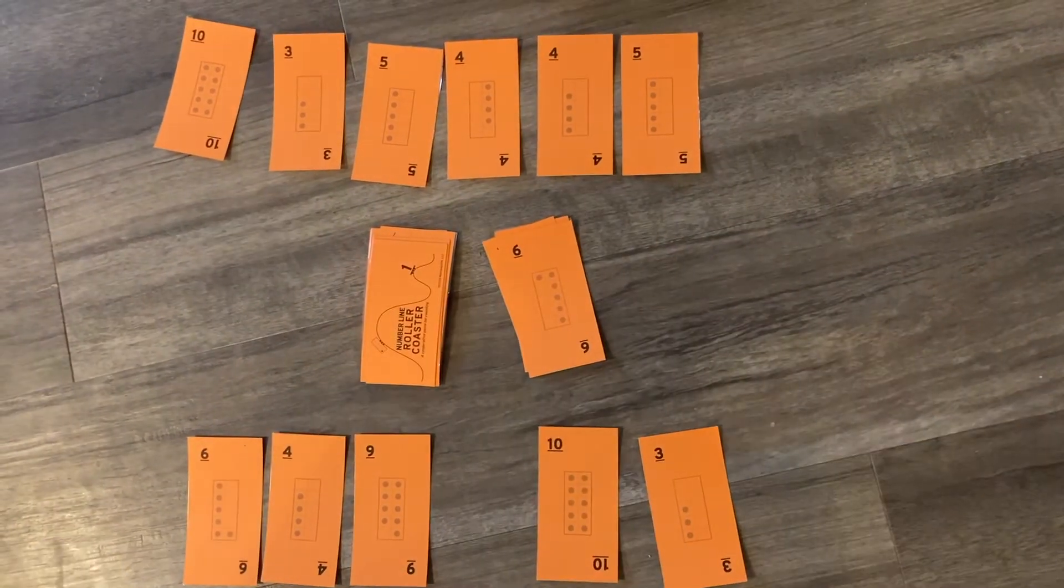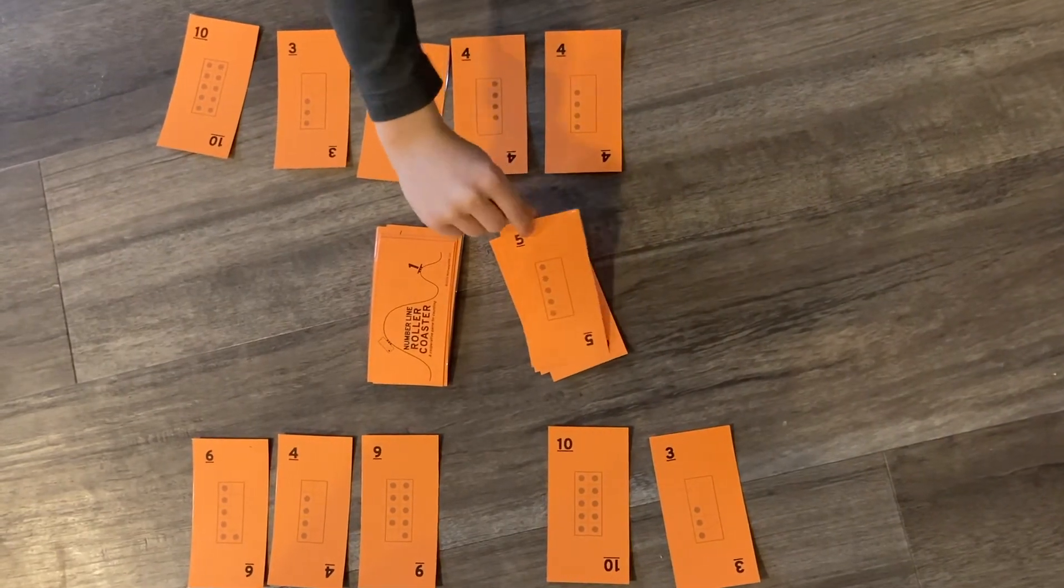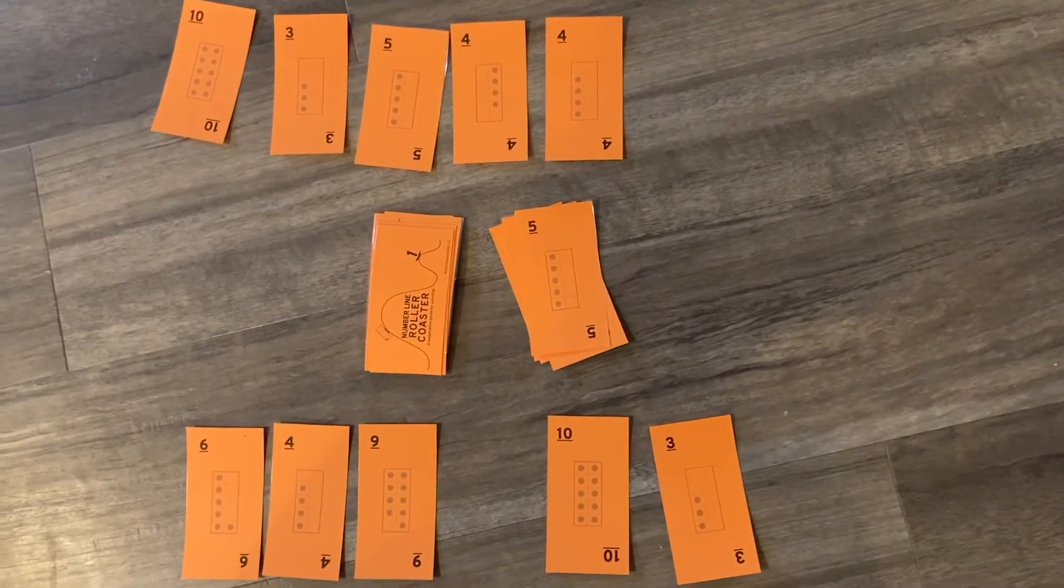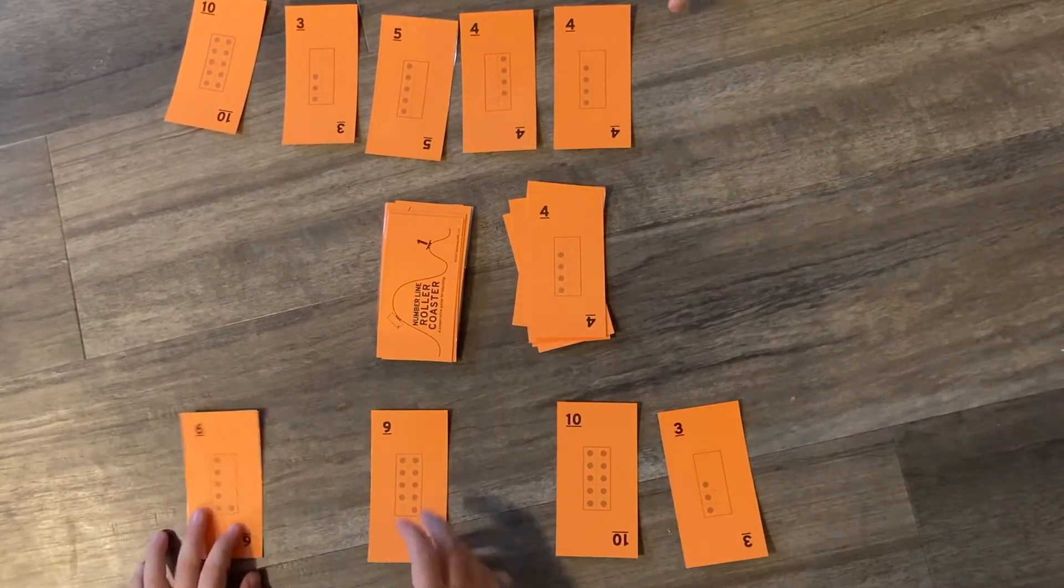Now, does anyone have anything they could play on a six? Either one more, that would be seven, or one less is five. Okay, so Clayton played a five. Antonin notices he has a four.